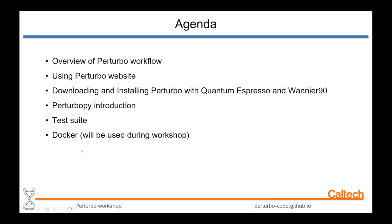Then I'm going to go over how to use the Perturbo website, which is a really good resource for you to use as you're running Perturbo calculations. Next, I will discuss how to download and install Perturbo from Quantum Espresso and Wannier90, which are its dependencies. I will then introduce Perturbo Pi, which is the Python package that is designed to complement Perturbo.